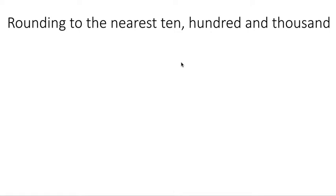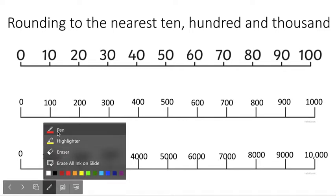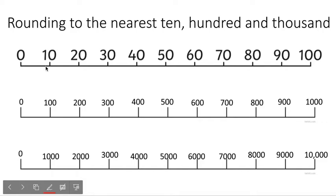Rounding is turning a number into a similar number that's almost easier to remember or understand, and it's only when you don't need quite as much detail that you can use it. For example, in that video, you don't need to know exactly how many sweets are in those jars — you just need to know approximately or have a good estimate. So we're looking at rounding to the nearest 10, 100 and 1,000. We've got a number line with 10s here. Halfway between 0 and 10 would be 5. Anything that's 5 and above will be rounded to 10.